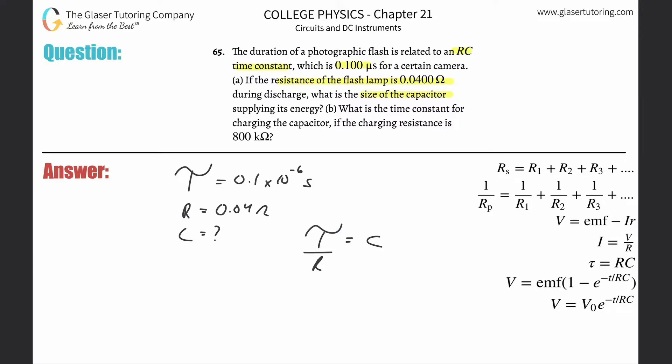So now, time constant was 0.1 times 10 to the minus 6, the resistance here is 0.04, and look at how nice and easy that is. So 0.1 times 10 to the minus 6 divided by 0.04, and we get a value of about 2.50, three sig figs, times 10 to the minus 6.